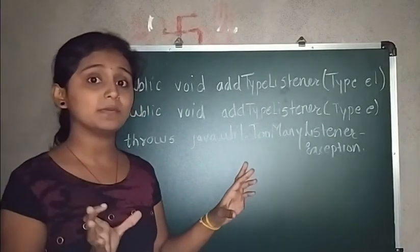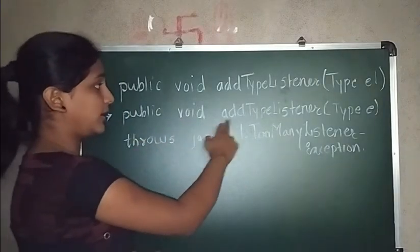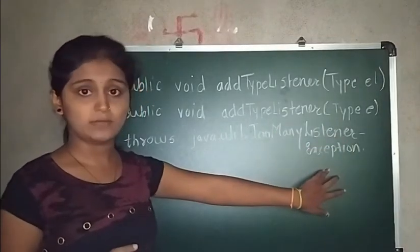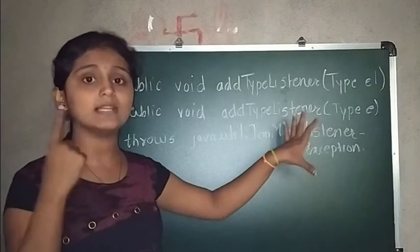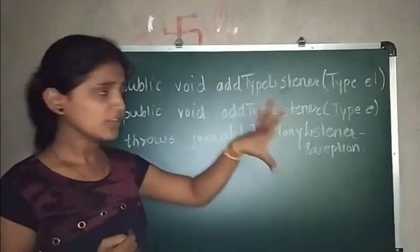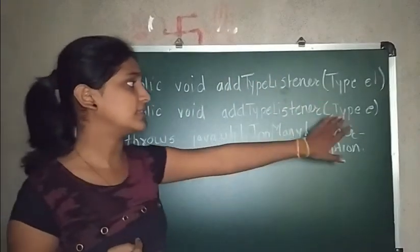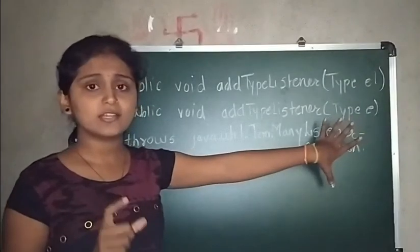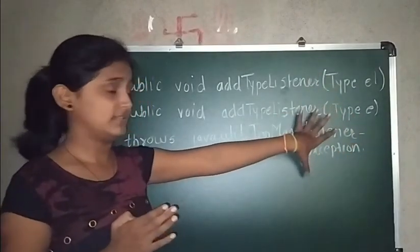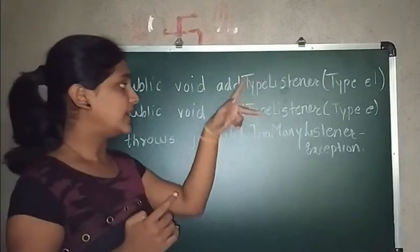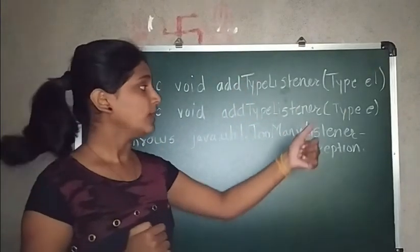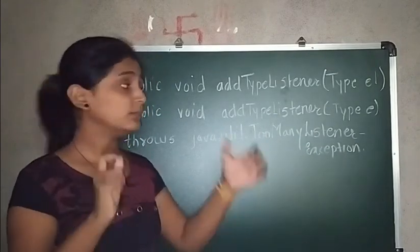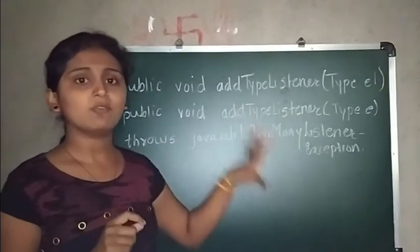Sometimes the source is registered with a single event. For that purpose the method used is: public void addTypeListener, and it will throw java.util.TooManyListenerException. Here type is the name of the event and el is a reference. After registration the listener will respond. This process, which uses java.util.TooManyListenerException, is called unicasting. Remember this term — unicasting process.